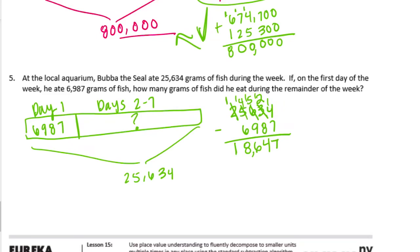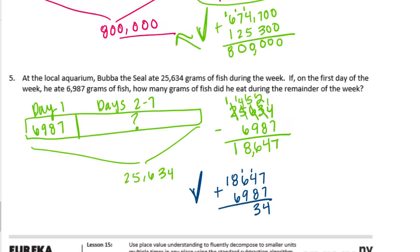Let's check to make sure: 18,647 plus 6,987. 7 plus 7 is 14, carry the 1. 1 plus 4 is 5, plus 8 is 13, carry the 1. 1 plus 6 is 7, plus 9 is 16, carry the 1. 1 plus 8 is 9, plus 6 is 15, carry the 1. And 1 plus 1 is 2. So 25,634 — that checks out. Our final answer is that during days 2 through 7, Bubba ate 18,647 grams of fish.